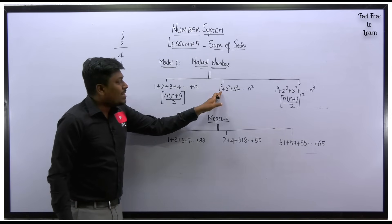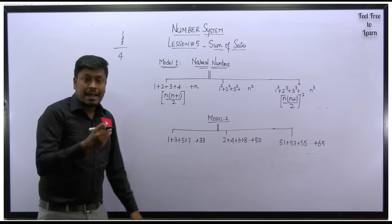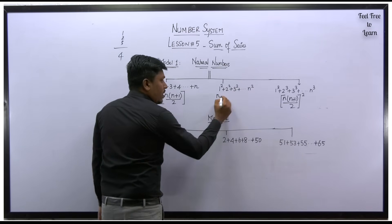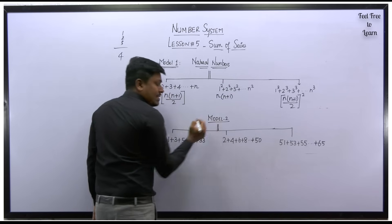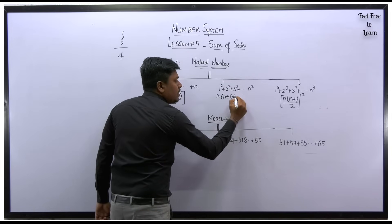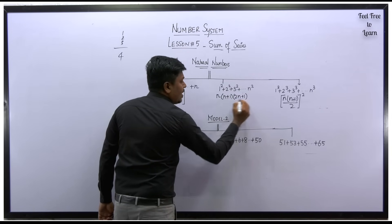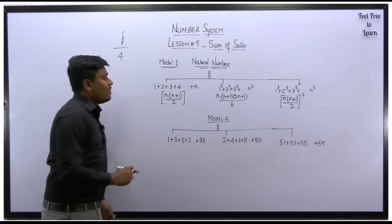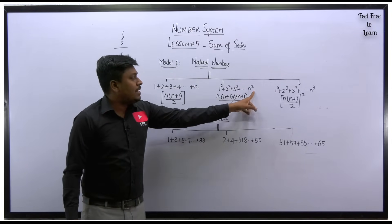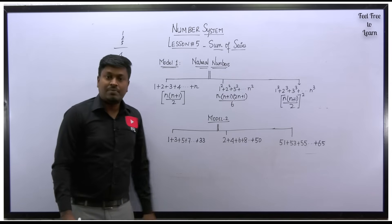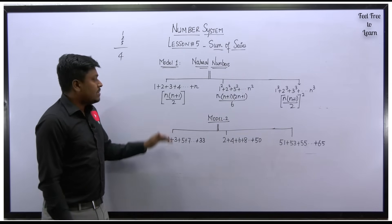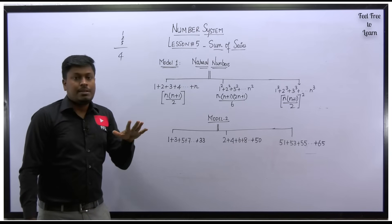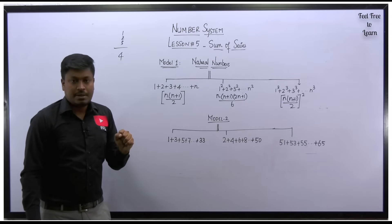If it is 1 square, 2 square, 3 square till n square, then the formula is n into n plus 1 into 2n plus 1 divided by 6. Always the value of n will be the last digit of the given series.